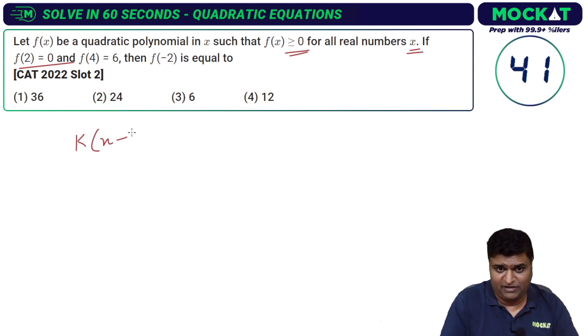The quadratic expression is nothing but k into x minus 2 the whole square. 2 is the root. And f of 4 is 6, so if I plug in a 4 over here, I'm going to get k into 4 minus 2 squared equals 6.